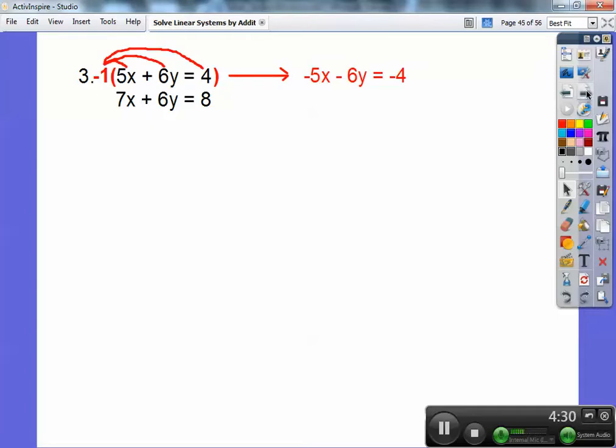So there I did it right over there. Everything, just go through and change all the signs of this equation right there. That's when you multiply by negative 1. So I get that right there. I'm going to slide the bottom equation right underneath it. And check it out.